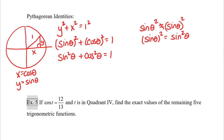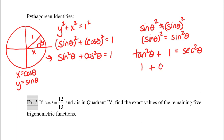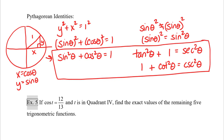Now watch what happens if we divide every term by cosine squared. Sine squared over cosine squared equals tangent squared, cosine squared over cosine squared is 1, and 1 divided by cosine squared is secant squared. That's our second Pythagorean identity: tangent squared plus 1 equals secant squared. Going back to the original identity and dividing everything by sine squared: sine squared over sine squared is 1, cosine squared over sine squared is cotangent squared, and 1 over sine squared is cosecant squared. That gives our third Pythagorean identity: 1 plus cotangent squared equals cosecant squared. These three identities relate sine to cosine, tangent to secant, and cotangent to cosecant.